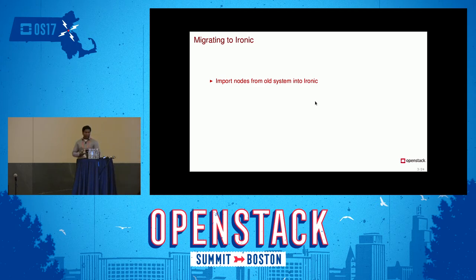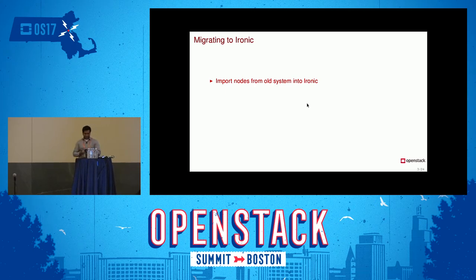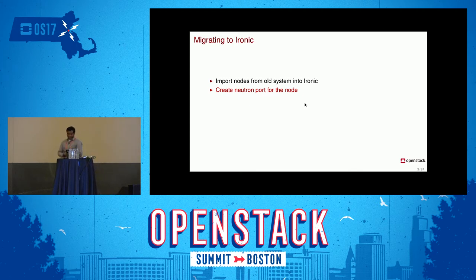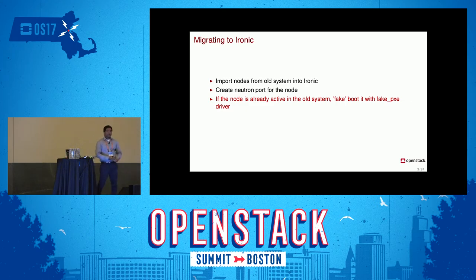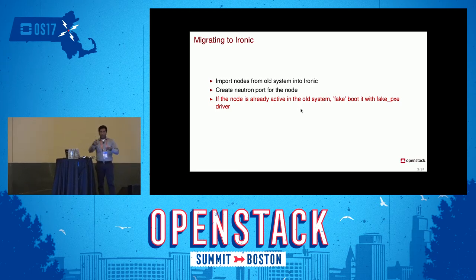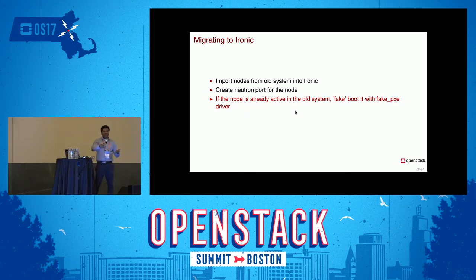Once the Ironic node is created, we set the driver initially to fake PXE rather than directly using the PXE IPMI tool driver. We also know the existing IP address and MAC address of the machine, so we create a Neutron port as well. Then we do an operation called fake boot — it creates a Nova instance and associates it with the Ironic node. This is similar to the adoption state in Ironic, where you can move a node from enroll to manageable to adoption, turning it active without ever touching the node.